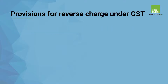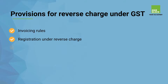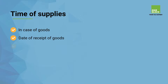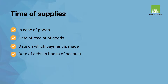Topics covered include: provisions for reverse charge under GST, invoicing rules, registration under reverse charge, composition scheme under GST, and time of supply for goods — specifically the date of receipt of goods, date on which payment is made, and date of debit in books of accounts.